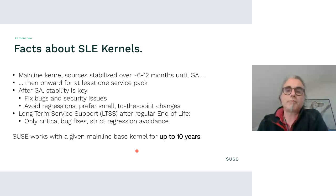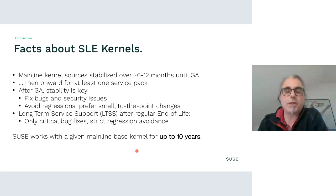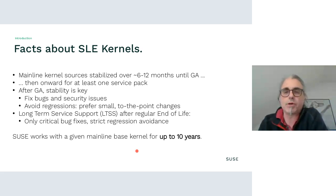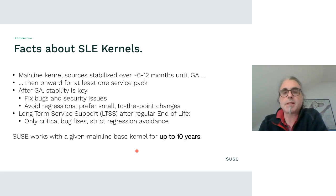We use mainline kernel sources which are stabilized over half a year or a year inside SUSE Labs until we reach GA, and then we continue using these mainline sources for at least one service pack, perhaps several. Once we reach GA, stability is most important — we try to fix bugs and security issues, and at the same time we try to avoid regressions. We prefer small and to-the-point code changes over large imports of new code, and that becomes even more strict once we reach long-term service support phase, where we would only allow critical bug fixes and strictly try to avoid regressions.